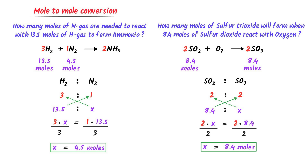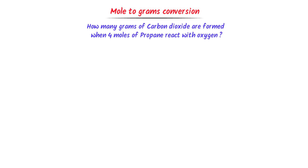The second type of stoichiometric conversion is mole-to-gram conversion. Consider this problem. I write the complete balanced chemical reaction: propane C₃H₈ reacts with oxygen to form carbon dioxide plus water. It is a simple combustion reaction. Now there are 3 carbons in the reactants and 1 carbon in the products.